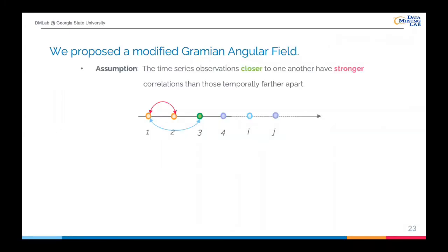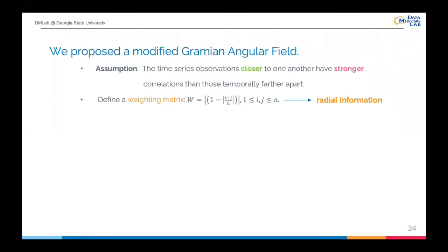With this idea, we proposed the modified Gramian Angular Field. The modified GAF is based on an assumption: time series observations closer to one another have a stronger correlation than those temporally farther apart. For example, given a time series, the first time point and the second time point have a stronger correlation compared to the first time point with the third or subsequent time points. Based on this assumption, we define a weighting matrix W, where i and j are the indices of time steps. The distance between two points is |i - j|, and the final weight is 1 minus the absolute value of the distance over the total length of the time series. In this way, closer time points have larger weights, while further time points have lower weights, and thus the radial information in the polar coordinates is utilized.